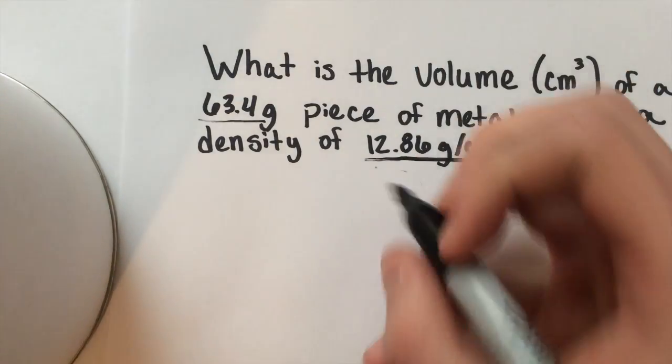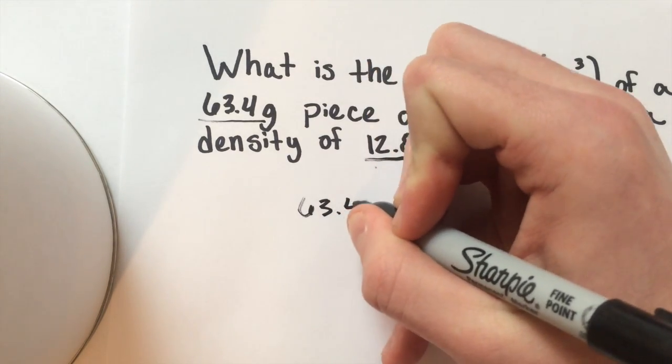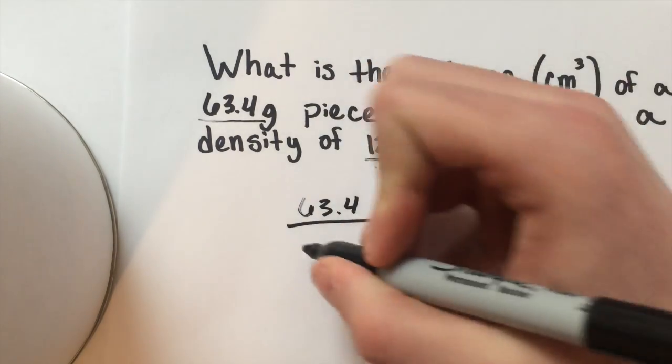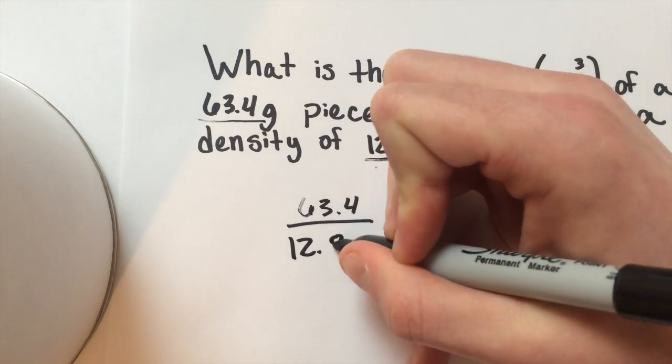So it looks like we have a mass of 63.4 grams and a density of 12.86 grams per centimeter cubed. So all we're going to do is divide these two out like we just said. So 63.4 over 12.86.